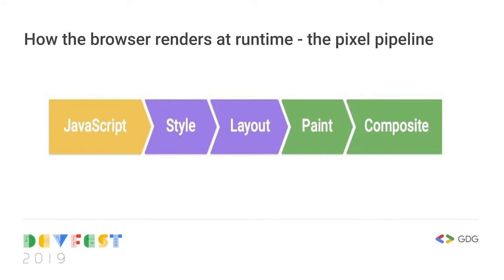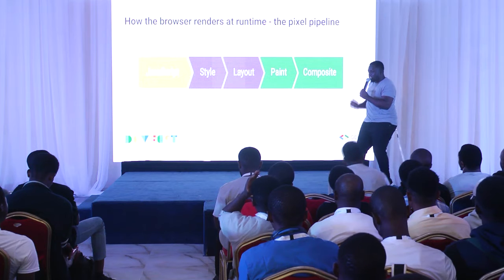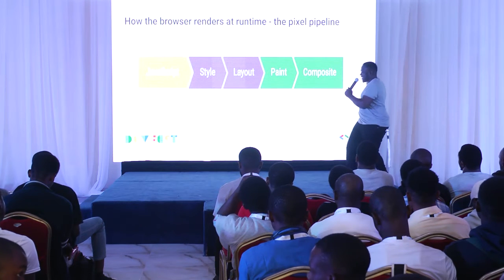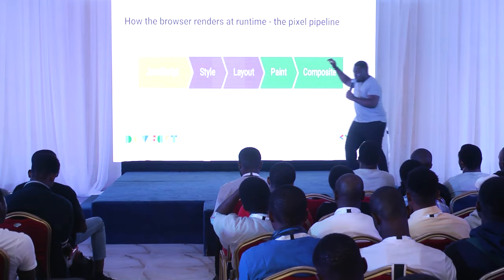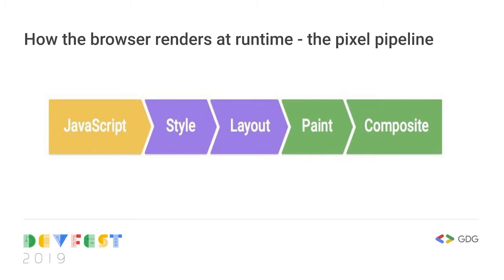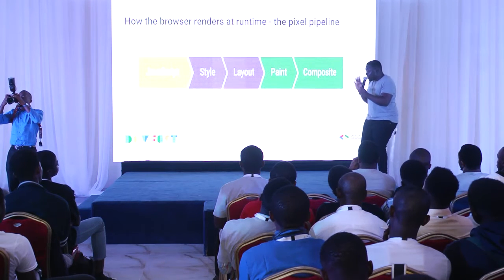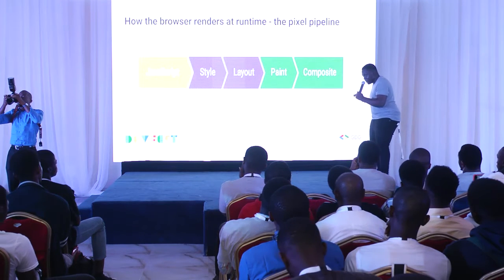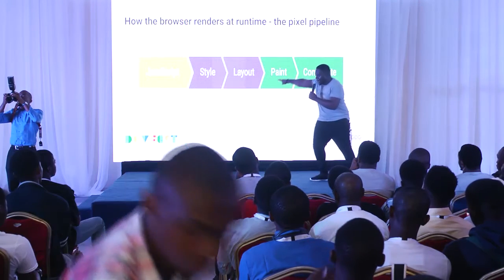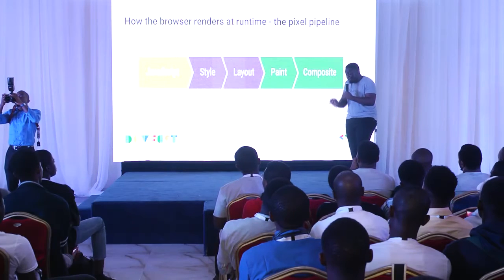When you write your JavaScript application, it triggers style changes. For example, if a user is scrolling and you write JavaScript to transform a div to slide in as they scroll, you've used JavaScript to change the style. The next step the browser has to do is calculate the geometry of the element — if you changed the width, the elements beside it have to shift. That's layout: the browser calculates and positions every element on the page.